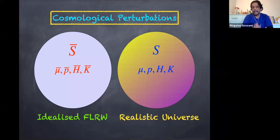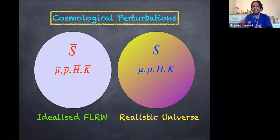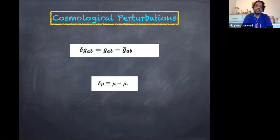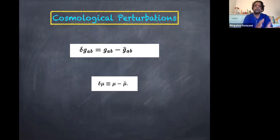Our idea is that from this idealized universe, there was a small perturbation in density, in matter, in gravitational perturbations — whatever — that created a lumpy universe, which is different but not much different from the idealized universe. So if the metric of the idealized universe is G-bar-AB, and the metric of the realistic universe is G-AB, then delta G-AB is the difference between these two. Similarly, delta mu is given by the energy density as we measure now subtracted from the idealized energy density.